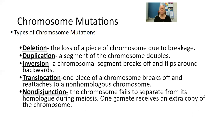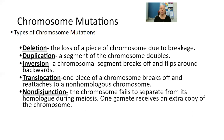Inversion is when a chromosomal segment breaks off and flips around backwards — it's inverted, so it might be going this way and then going the opposite direction. Translocation is when a piece of chromosome breaks off and reattaches to a non-homologous chromosome, basically relocating to someplace it wasn't supposed to be. Non-disjunction is when the chromosome fails to separate from its homologue during meiosis, so one gamete might receive an extra copy of the chromosome.